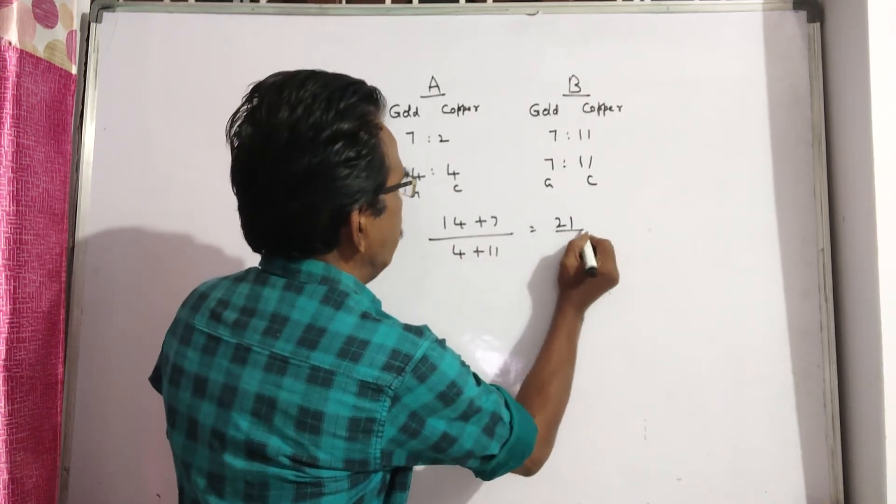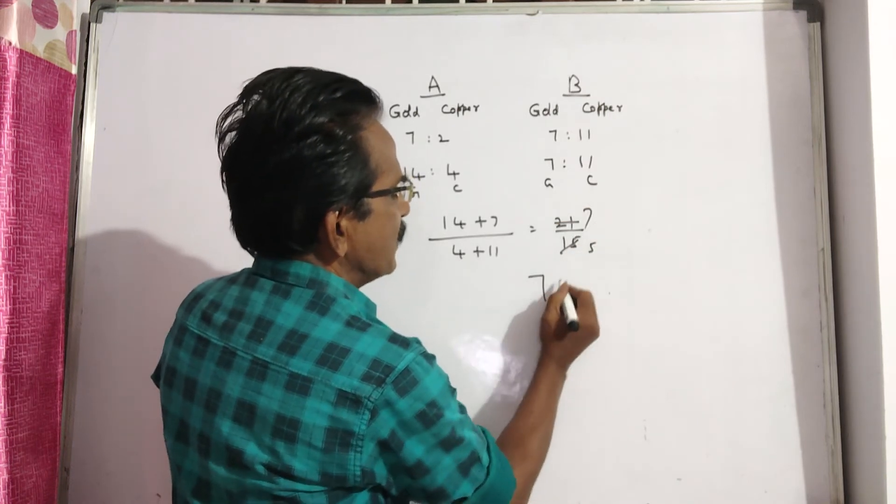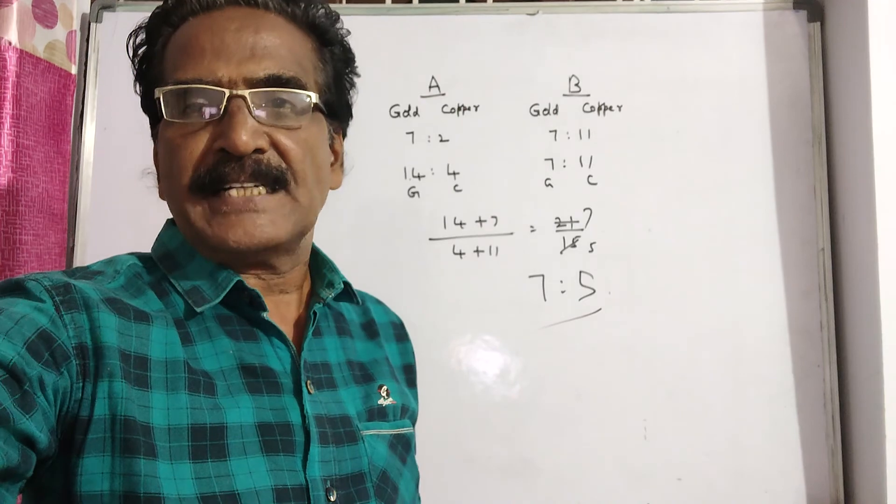That is 21 by 15, 3 times 7, 3 times 5, 7 is to 5 is the required ratio of friends.